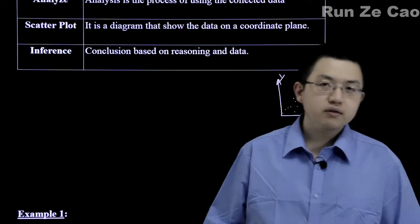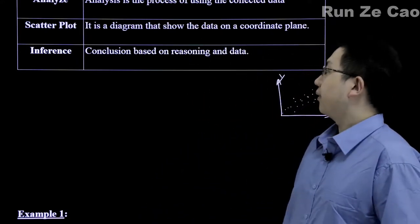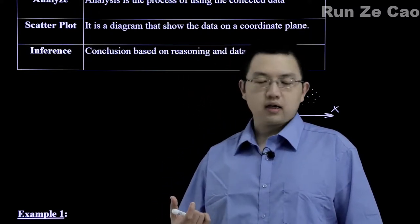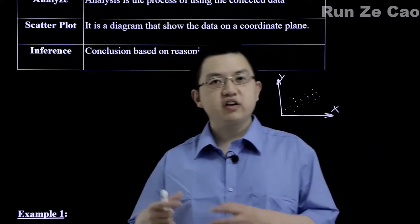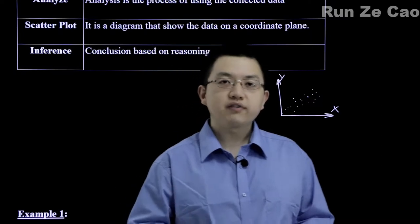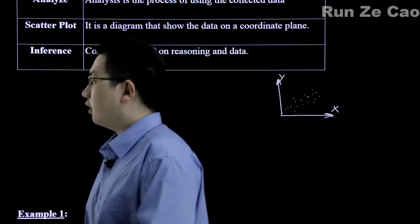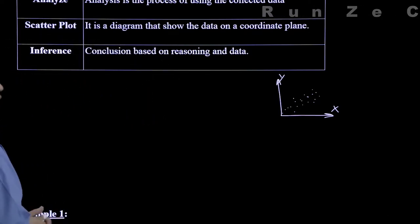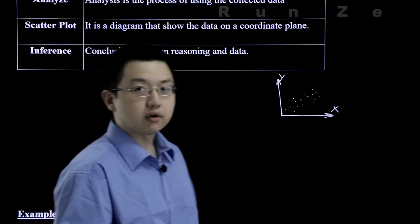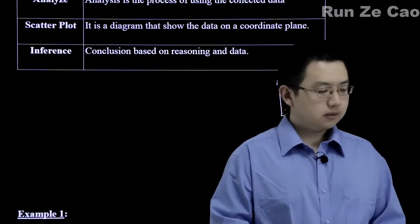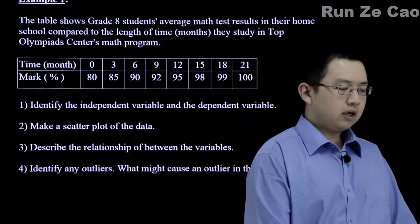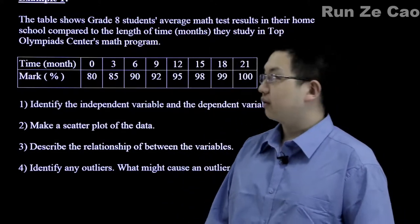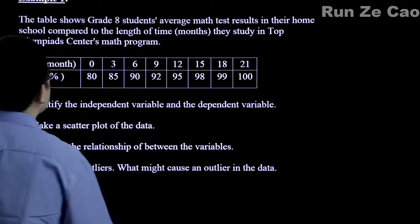An inference is a conclusion that is based on reasoning and data. For example, if you take a lab mouse and subject it to different temperatures and measure its heart rate at different temperatures, you could get an inference that as the temperature increases over a certain range, the heart rate of the mouse increases or decreases. It is also possible to infer that the dependent variable is in fact not dependent at all on the independent variable. Let's do some examples.